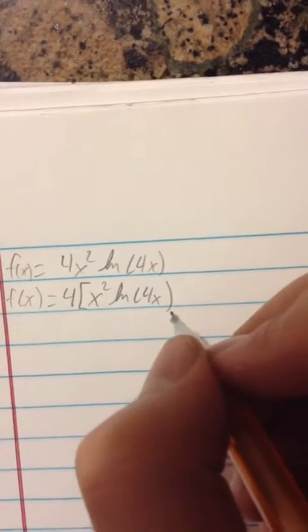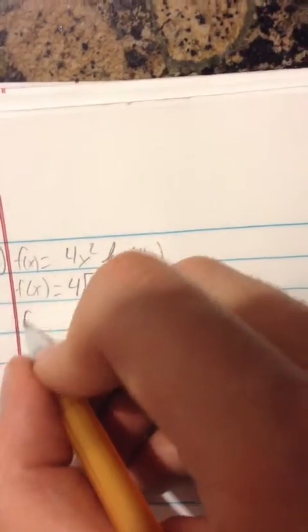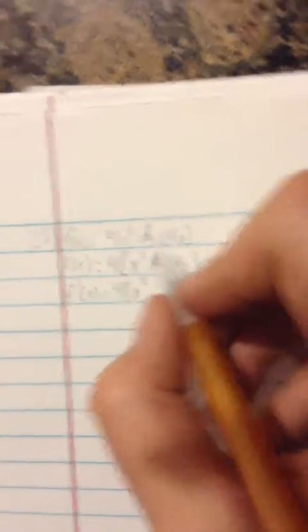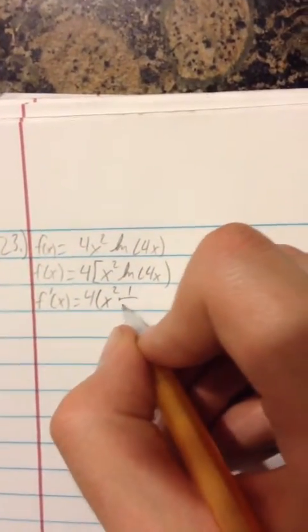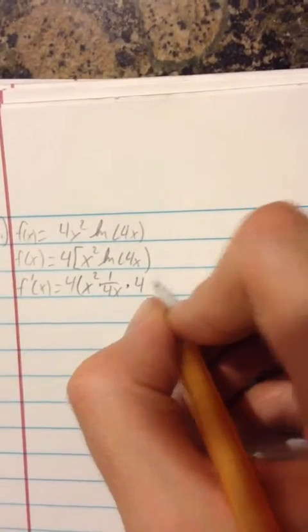Alright, the next thing we're going to do is we're going to do the derivative. So f prime of x equals 4 times x squared the first time the derivative of the second, 1 over 4x times the derivative of the inside which is 4.